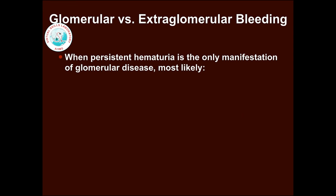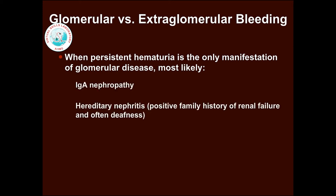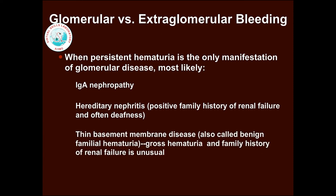When persistent hematuria is the only manifestation of glomerular disease, it is most likely due to IgA nephropathy; hereditary nephritis, which is often associated with a positive family history of renal failure and deafness; or thin basement membrane disease, also called benign familial hematuria.